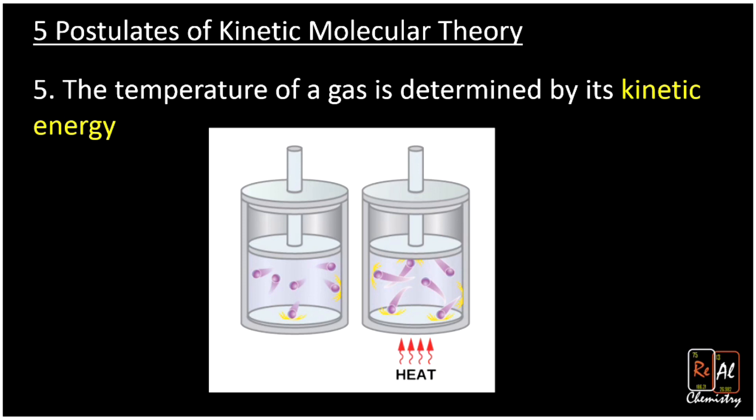Postulate five: the kinetic energy of a gas determines its temperature. So the kinetic energy that our molecules have is what tells us what temperature it is. You can see here in our two cylinders, we have one that's been heated up, and these longer tails are indicating that they're moving faster. So something that's warmer is just simply moving faster, has higher kinetic energy.